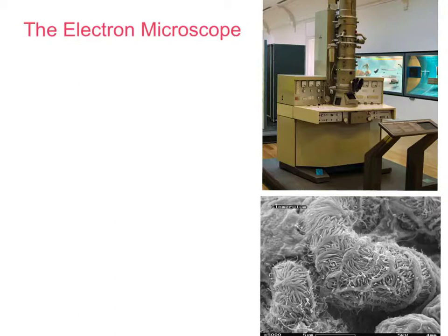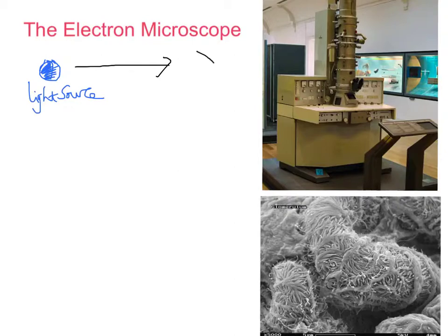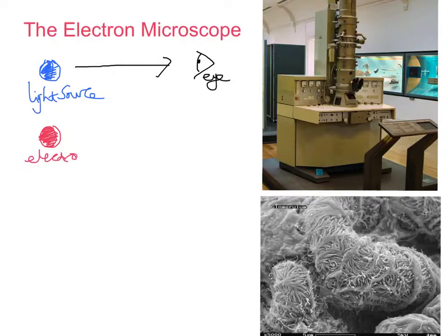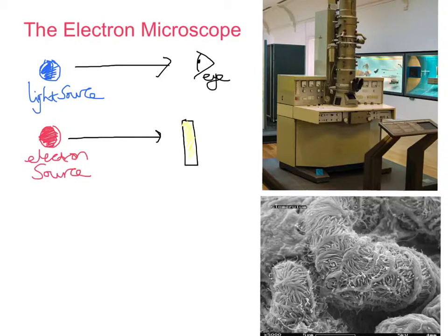Here's the fundamental difference between the two. In a light microscope what we would have is a light source, and ultimately we would have light rays that pass from that light source all the way to the human eye. But what we have with the electron microscope instead is an electron source, and instead of having the eye as the receiver, we have a fluorescent screen.